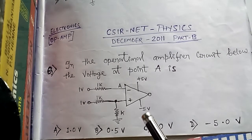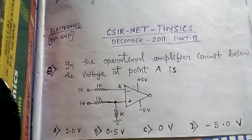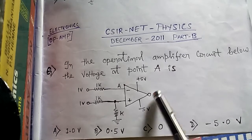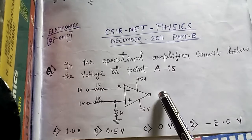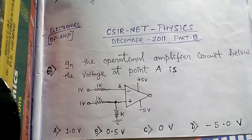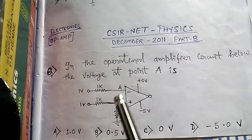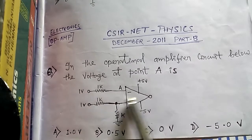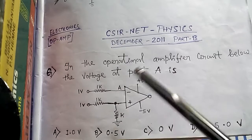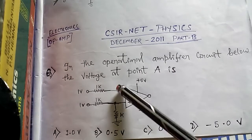For solving this problem, we do not need prior knowledge of the differential amplifier, because this problem is not about the output of this circuit. If it were about the output, we would need the standard output formula for the differential amplifier. But this question simply asks: what is the voltage at this point? So this problem is independent of whatever circuit it is.